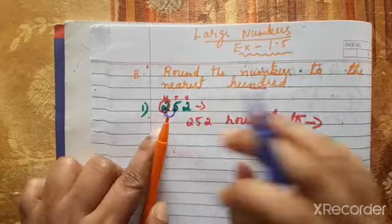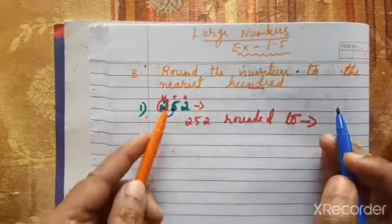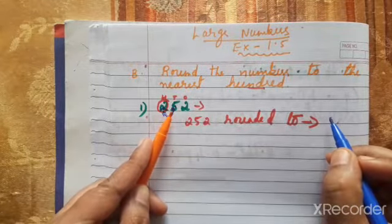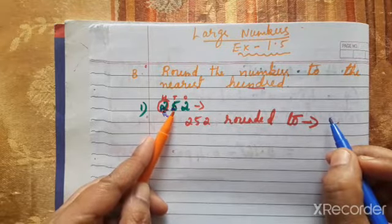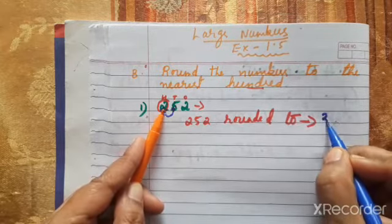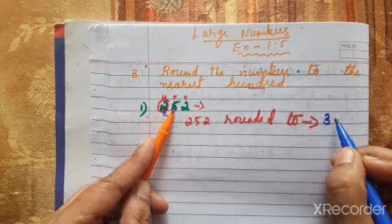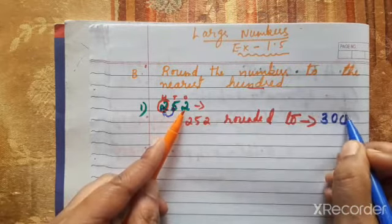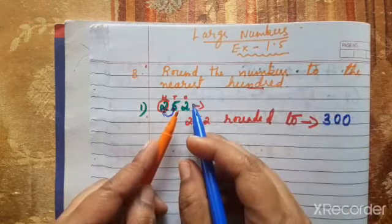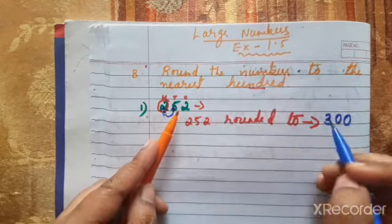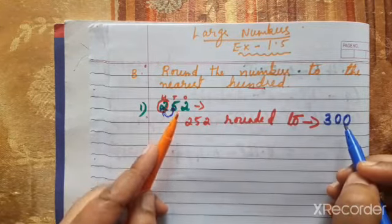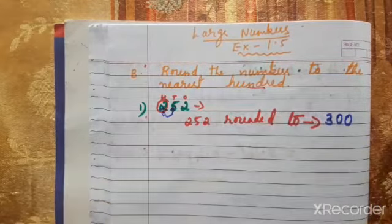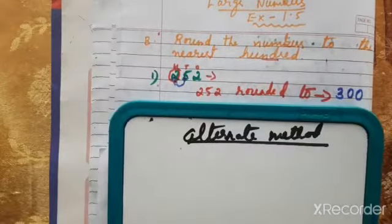To confirm: hundreds place is being rounded. Next digit is 5, so it can help — 2 becomes 3. Once door knocked, the remaining digits become zero. So the answer is 300. Any other digits after the rounded place also become zero according to the rule.